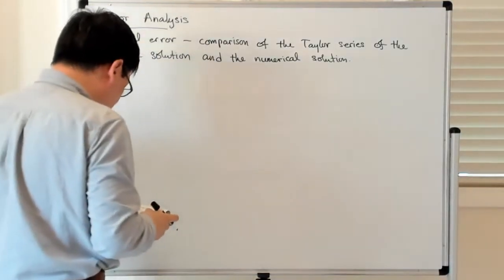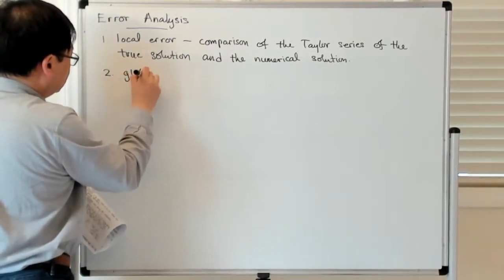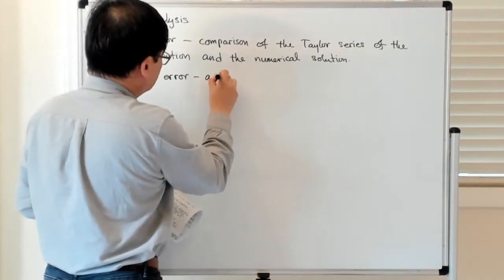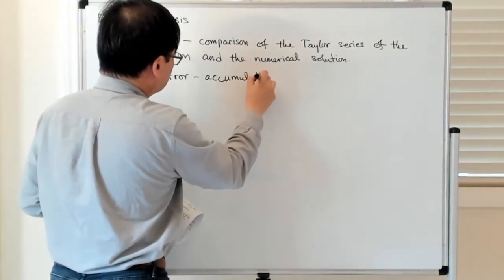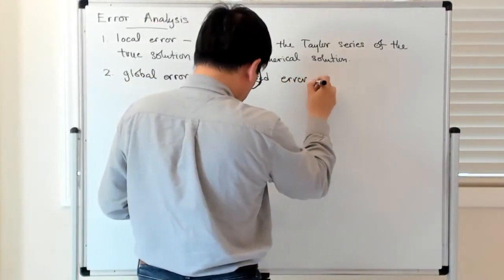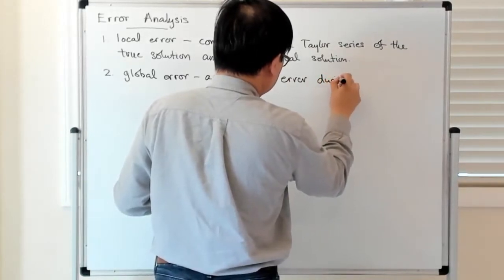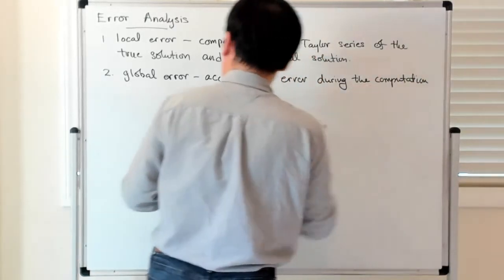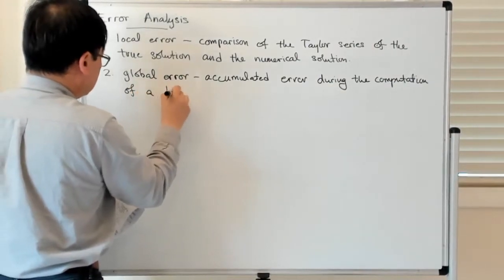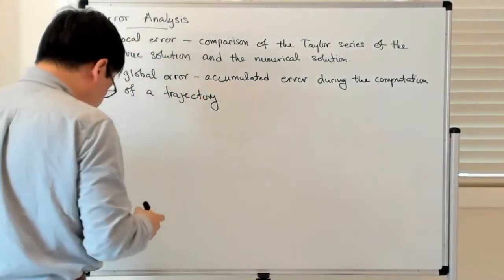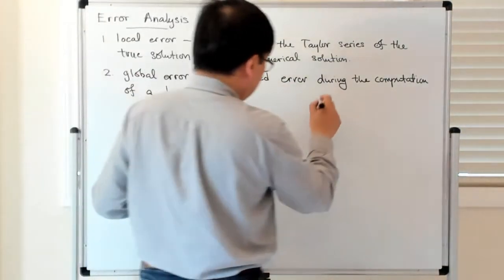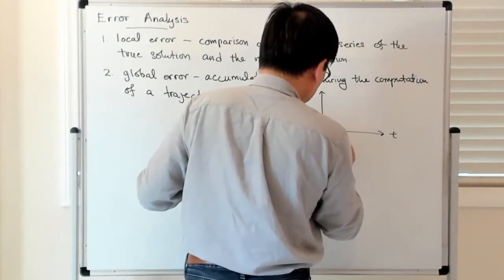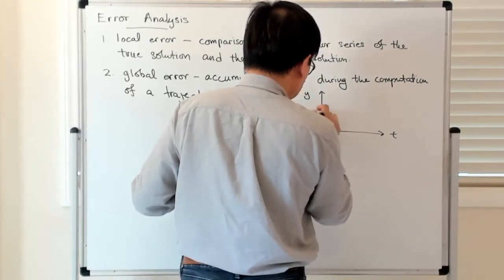The second thing is this idea of global error — the accumulated error during the computation of the trajectory. So the idea is the following: if this axis is time and this is y, and you start with some initial time t0 at some initial value y0.